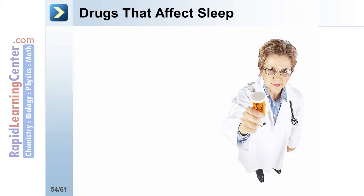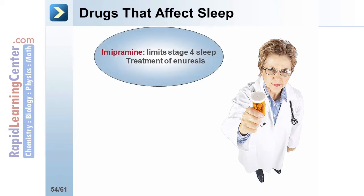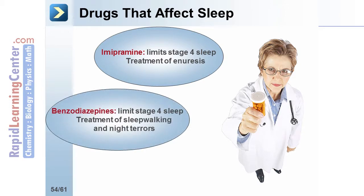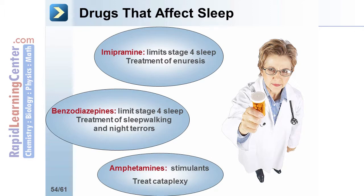Some drugs are used to limit certain stages of sleep as follows. Imipramine limits stage 4 sleep and is used in the treatment of enuresis. Benzodiazepines also limit stage 4 sleep and are used in the treatment of sleepwalking and night terrors. And amphetamines, acting as stimulants, can be used to treat cataplexy.